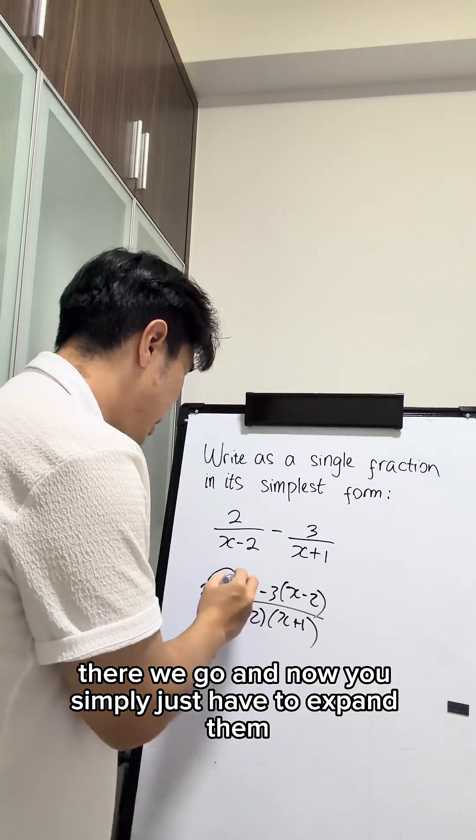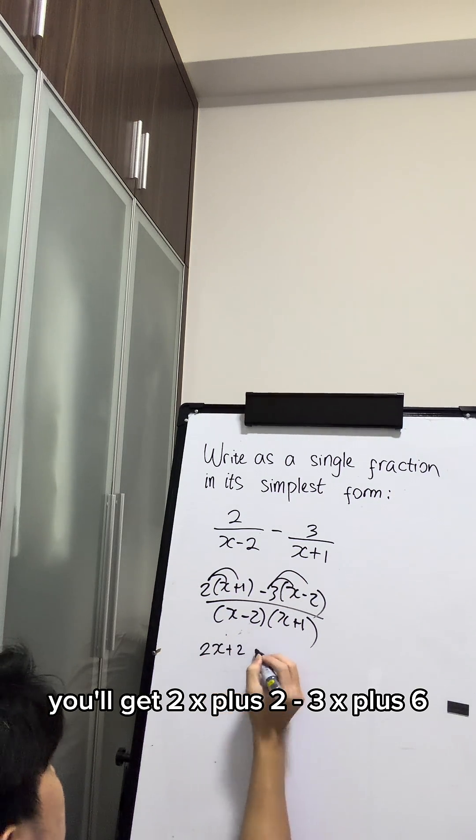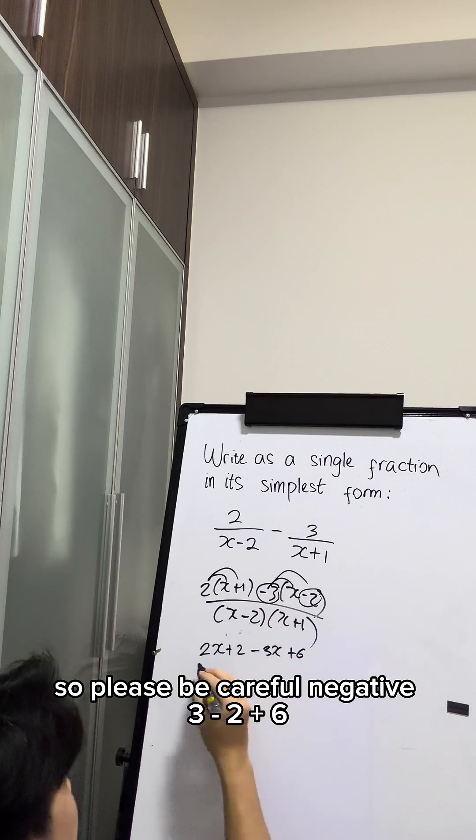And now you simply just have to expand them. You'll get 2x plus 2 minus 3x plus 6. So please be careful, negative 3, negative 2, plus 6.